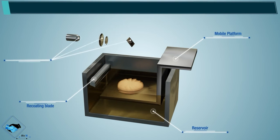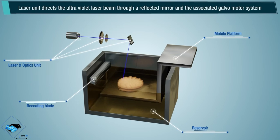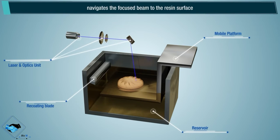The Laser and Optics Unit directs the ultraviolet laser beam through a reflected mirror, and the associated galvo motor system navigates the focused beam to the resin surface.